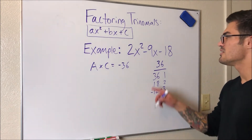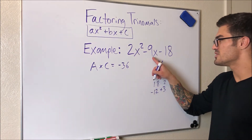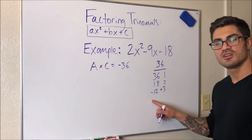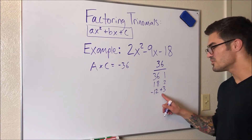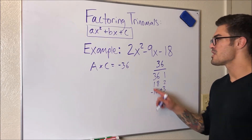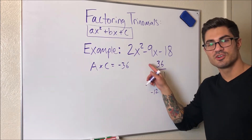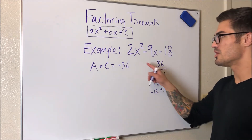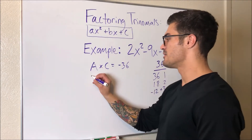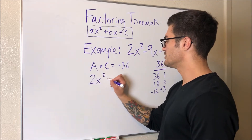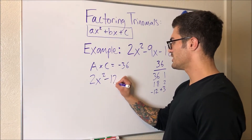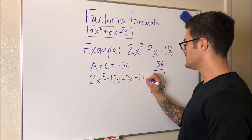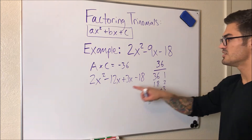So we're going to use these numbers. Basically what we're going to do is split up this negative 9x into two separate terms — they're actually going to end up being negative 12x plus 3x. These magic numbers we find are the numbers we use to rewrite the middle term and separate it into four terms so we can factor by grouping. I'm going to rewrite this as 2x squared minus 12x plus 3x minus 18.